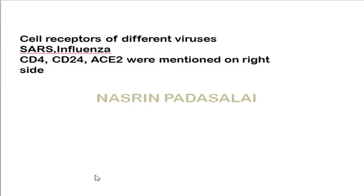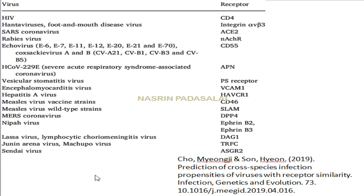First, they gave a list of viruses and asked us to match the respective cell surface receptor for each virus. This particular table is very helpful and you can use it for the upcoming CSIR examination. HIV virus receptor is CD4, and SARS coronavirus receptor is ACE2.